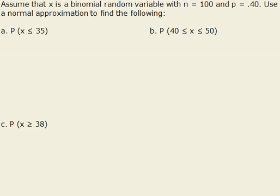Assume that x is a binomial random variable with n equals 100 and p equals 0.4. And they want us to use the normal approximation to find the following. Before we find the following, it'd be nice to know what our mean is. Our mean is n times p, so in this case, 100 times 0.4, which is 40.